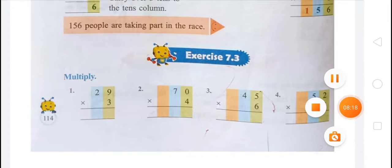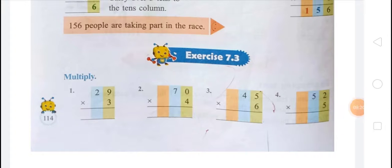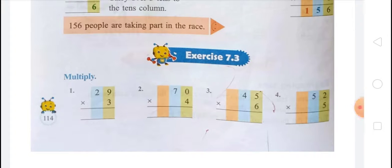Now exercise 7.3. The first question is 29 multiplied by 3. In step one, multiply the ones: 3 nines are 27, so write 7 and carry 2. Then 3 twos are 6, plus 2 carry is 8. So the answer is 87.